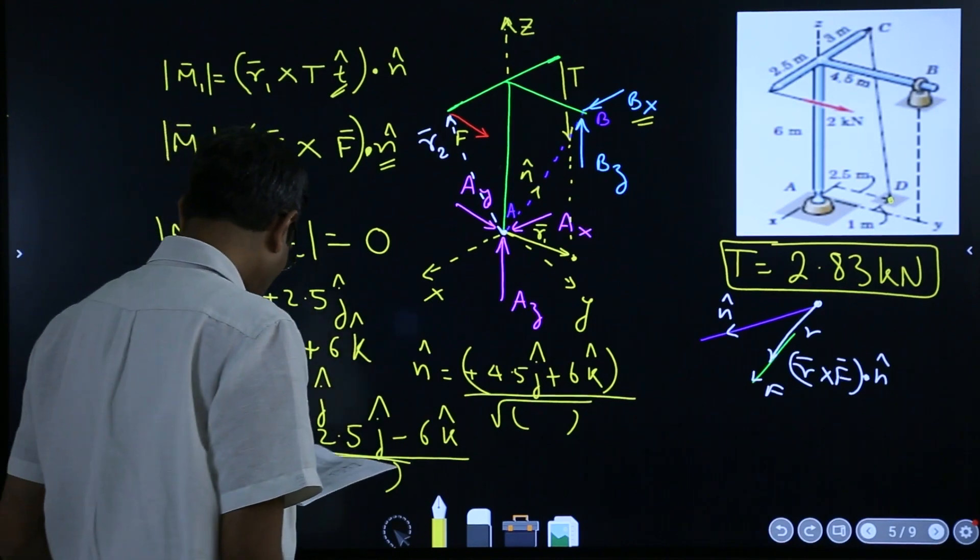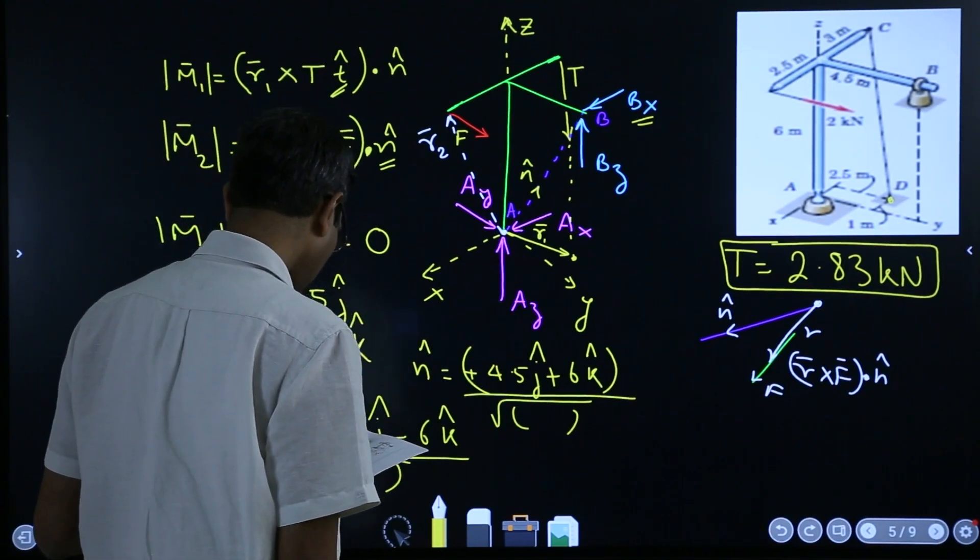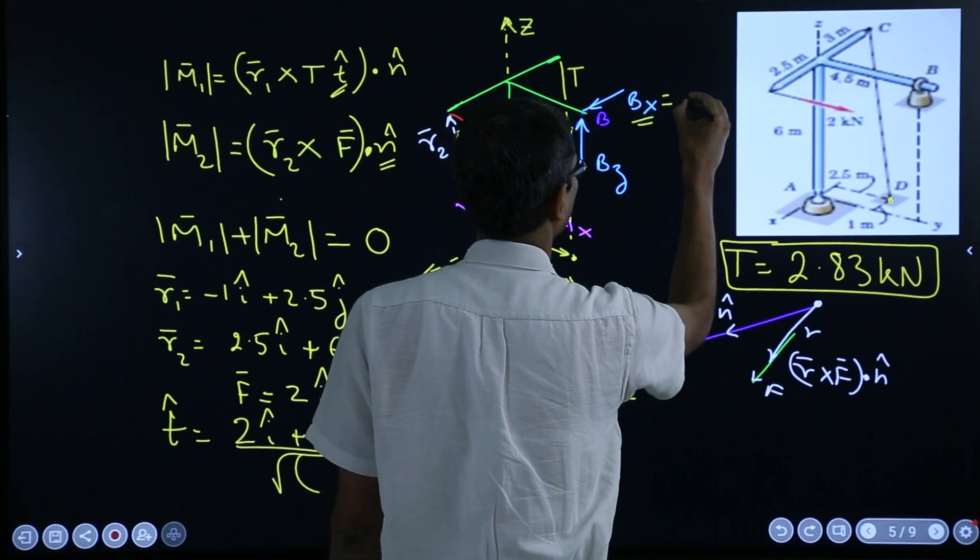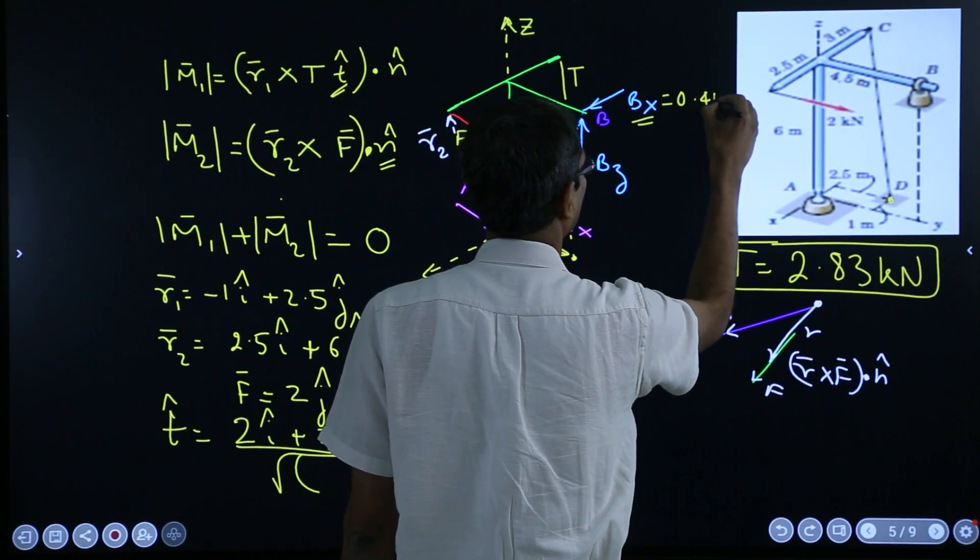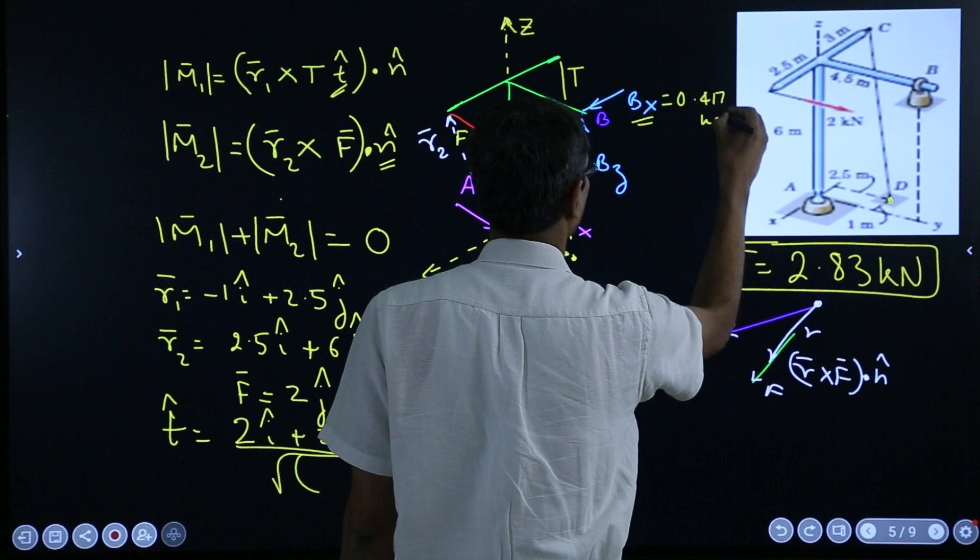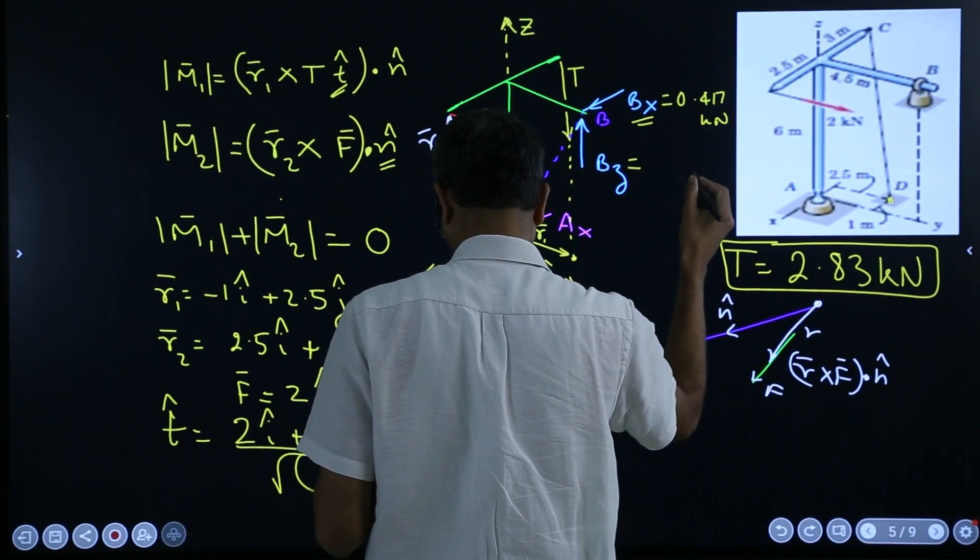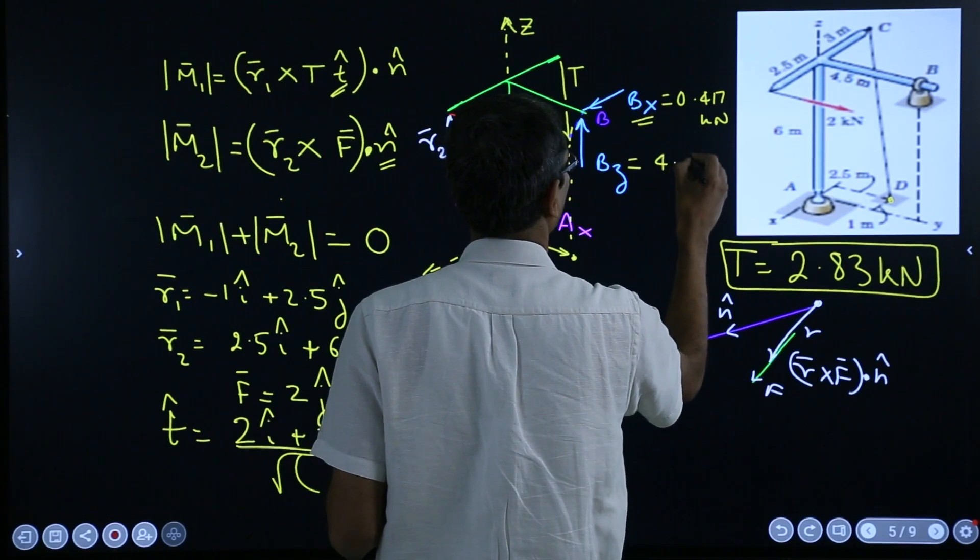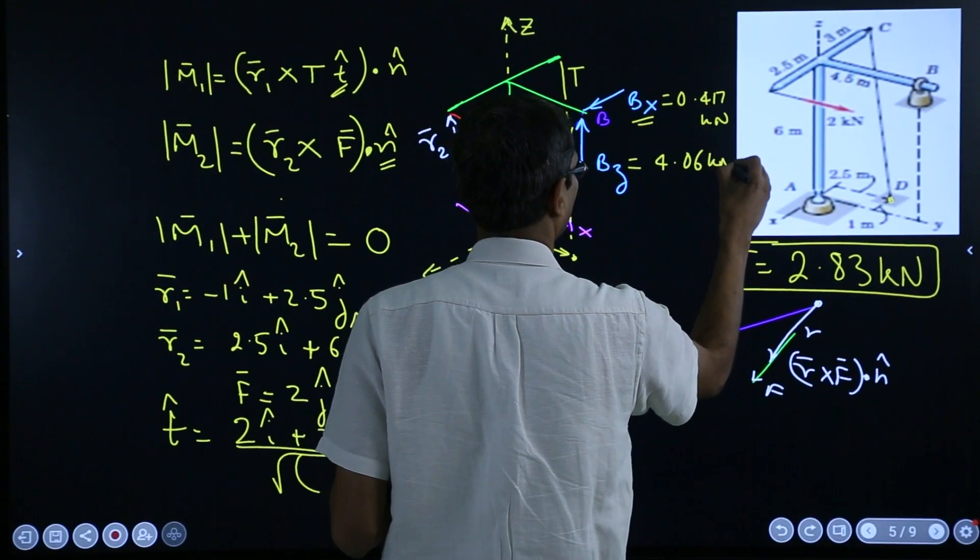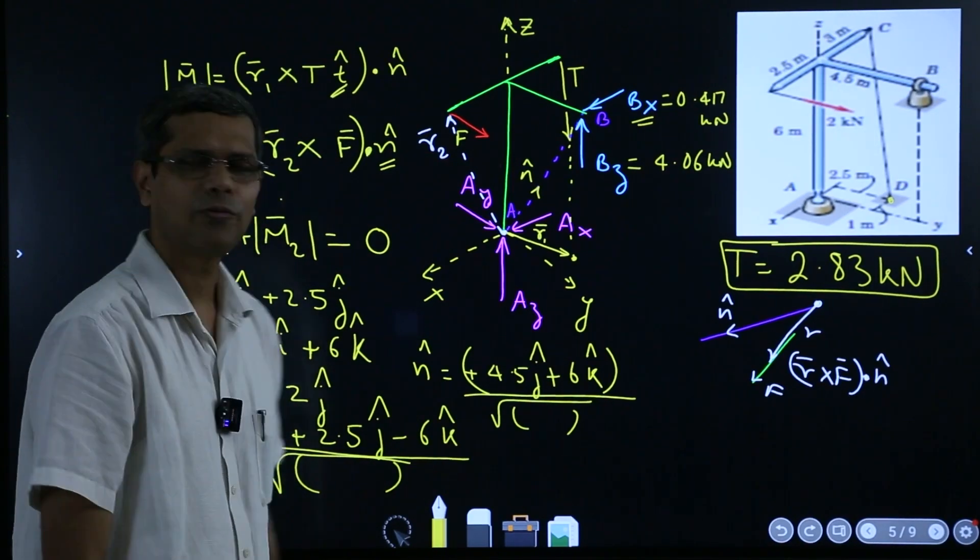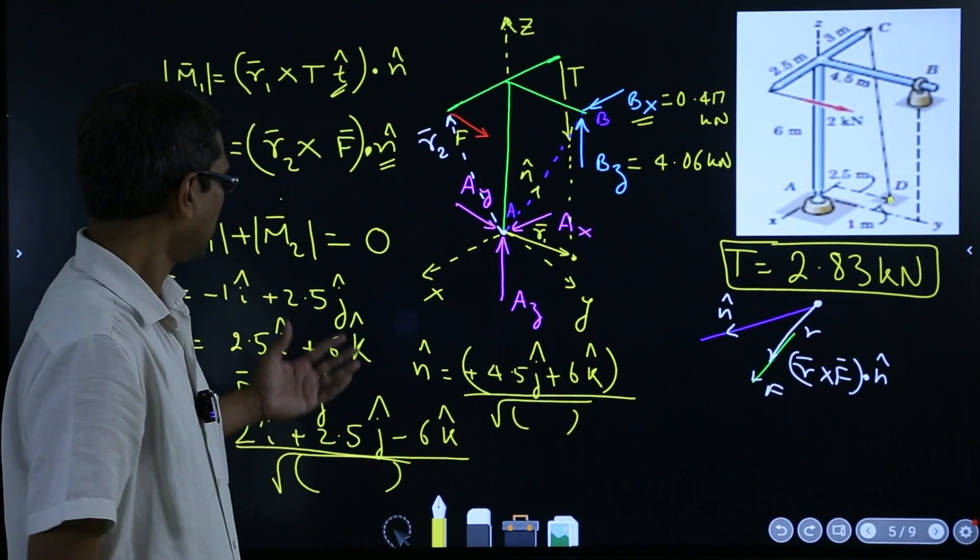So Bx will come out to be I think 0.417 kilo Newton. Bz will come out to be 4.06 kilo Newton. And Ax, Ay, Az, then you can evaluate from force balance. So that is how you should solve such problems.